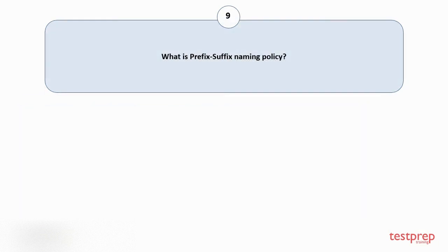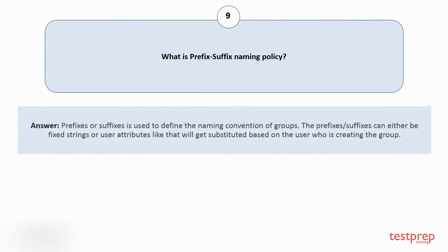Question number 9: What is prefix suffix naming policy? Prefixes or suffixes are used to define the naming convention of groups. The prefixes or suffixes can either be fixed strings, or user attributes that will get substituted based on the user who is creating the group.